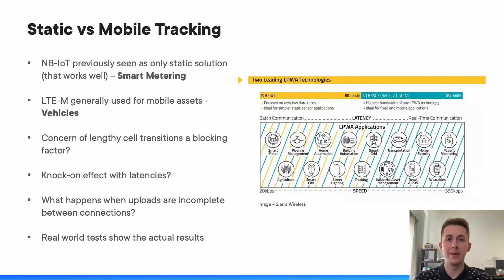Looking at how LTE-M and NB-IoT have been used in static and mobile asset tracking: historically, NB-IoT has been a static solution and LTE-M has been the mobile roaming solution. The concern of lengthy cell transitioning has always been seen as a blocking factor, with concern around what happens to data uploads during these lengthy transitions — which is why we've done some real-world testing to prove what the results look like today.